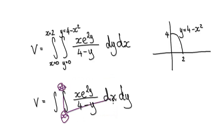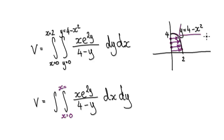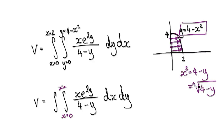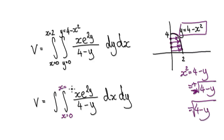Moving parallel to the x-axis, we start at x = 0 and end at the curve. We need to rearrange y = 4 − x² to make x the subject: x² = 4 − y, so taking the square root of both sides gives x = √(4 − y). We only care about the positive version, so we can ignore the negative.